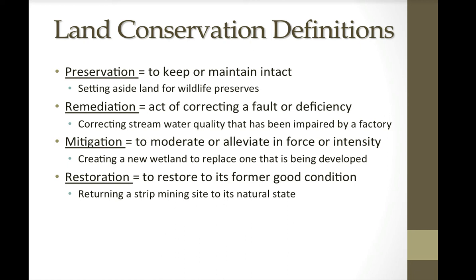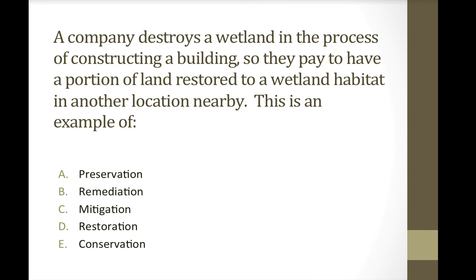These are the four main terms you'll see on the AP test — preservation, remediation, mitigation, and restoration — each with its own distinct meaning. Final question: a company destroys a wetland while constructing a building, then pays to have a portion of land restored to wetland habitat in another nearby location. Is this A, preservation; B, remediation; C, mitigation; D, restoration; or E, conservation? The correct answer is mitigation — even though the word 'restore' appears, a wetland was destroyed in one place and rebuilt somewhere else, which is mitigation: replacing the wetland that was lost.